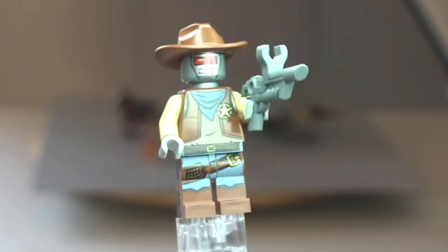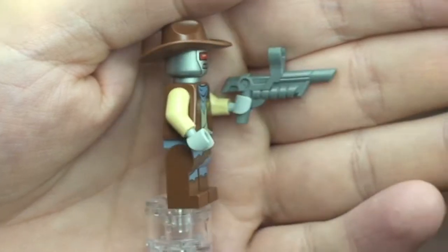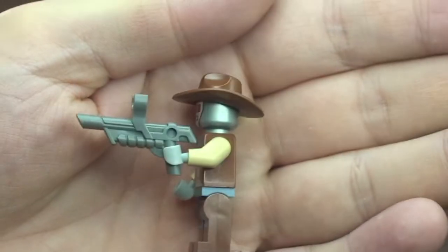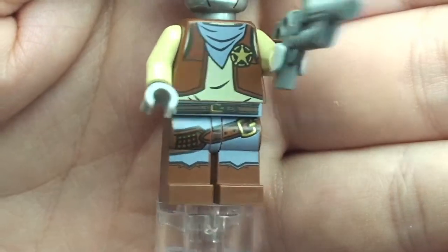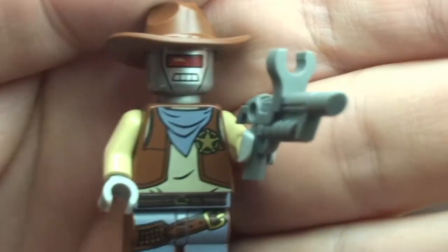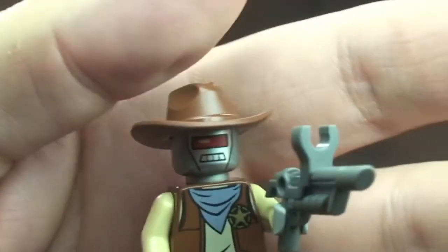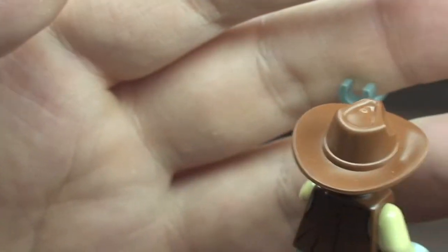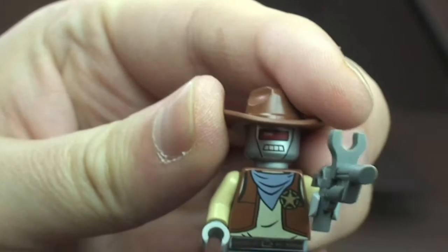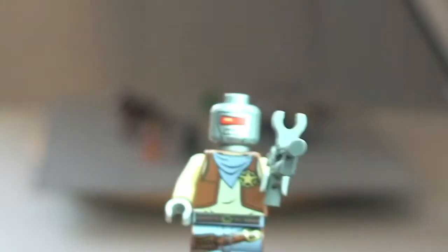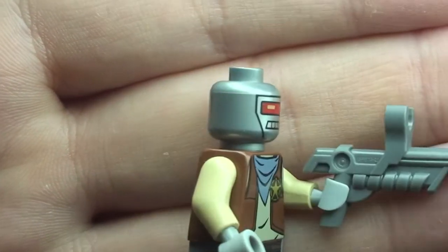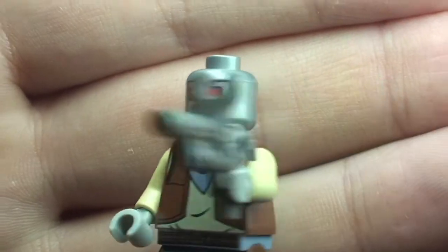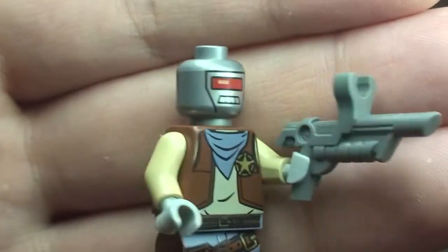Next up we have our Deputron. You can see here it comes with this rather cool looking blaster. See some of that printing detail there on the legs, see that front torso printing. And on the rear, obviously comes with this brown cowboy style hat. Take a better look there at that head printing and the silver colored head.